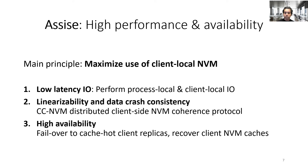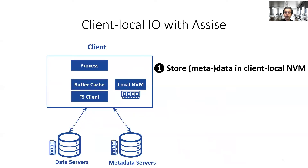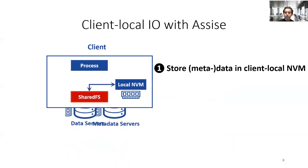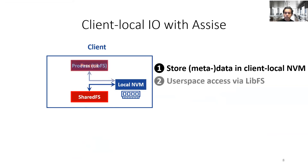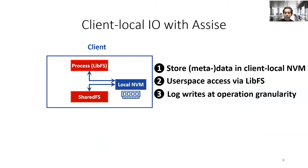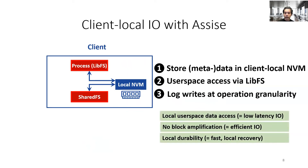We next look into how we re-architect the traditional client-server distributed file system model to achieve these goals. Our first design choice is to move file system data and metadata management to client-local NVM managed by a client-shared file system daemon called SharedFS. Secondly, to remove kernel-crossing overheads for process-local IO, ASIS provides a library file system called LibFS. LibFS intercepts POSIX file system calls and executes them in user space. Thirdly, LibFS writes data and metadata at operation granularity — as opposed to blocks — to an operation log in process-private NVM, providing processes with direct user-space data access without block amplification, reducing IO latency while also providing local durability essential for fast recovery.